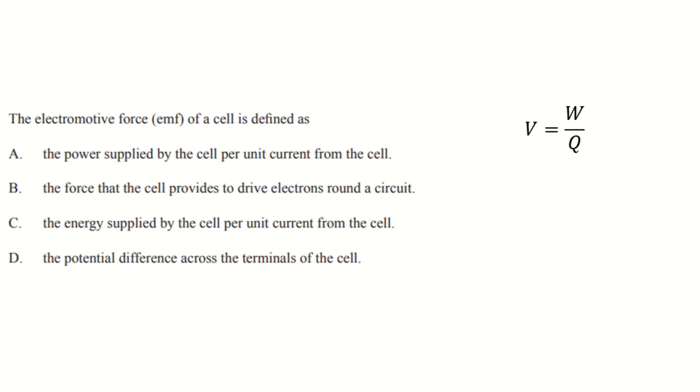Now, we've used there this equation, V equal to W over Q, work done per unit charge. Now, if you're looking at those answers, you cannot see any of those options which correspond to that, okay? And that's because this has been phrased in a slightly different way.